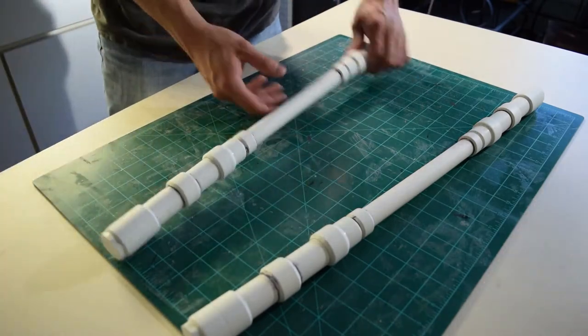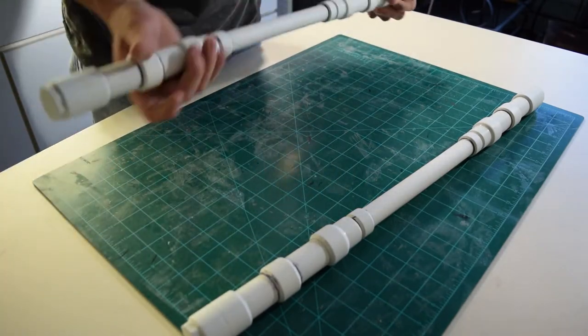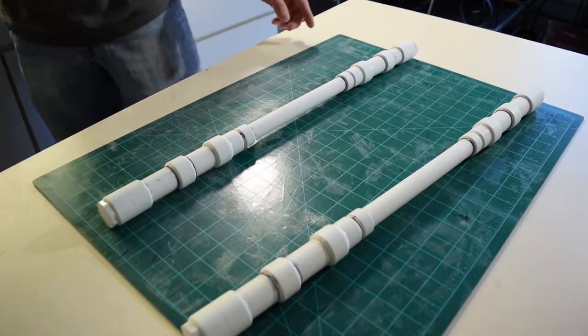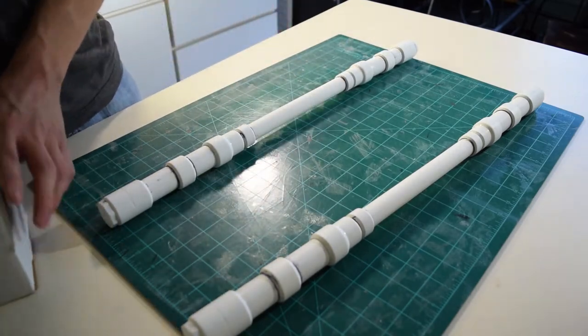Okay, now I've sanded these down all to a 220 grit and I've hit them with my sanding sponge.